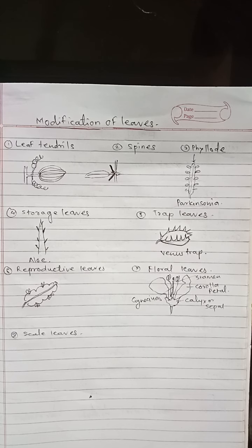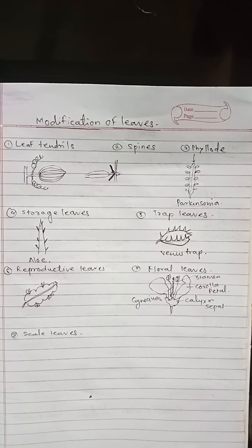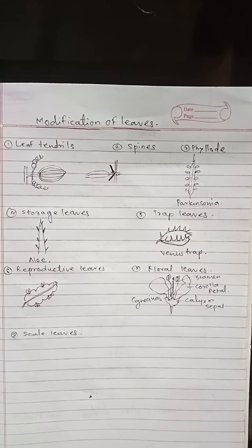In Parkinsonia, Acacia, and Ziziphus, stipules get modified into spines. Next is phyllodes — it is a green expanded structure formed by the modification of the petiole or rachis of the leaf. Many xerophytes reduce the size of their leaves to minimize water loss; such plants develop phyllodes to carry out photosynthesis. Examples are Acacia, Parkinsonia, Melanoxylon, and Ziziphus.